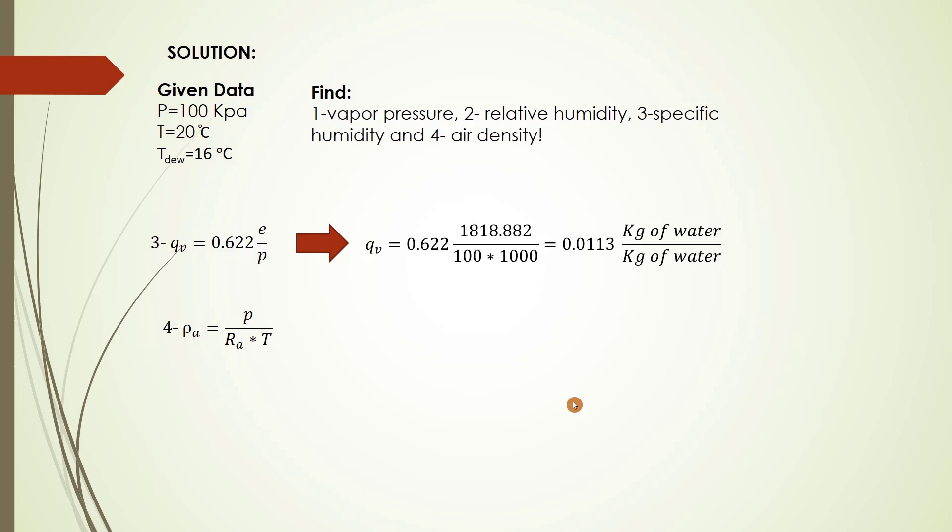The last one is air density. That is the equation for air density equals pressure over R a multiply T. But we have to take care that T is in Kelvin. So we have to find the factor of R a at first. R equals 287 multiply 1 plus 0.608 multiply qv.